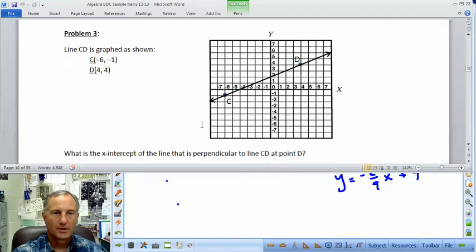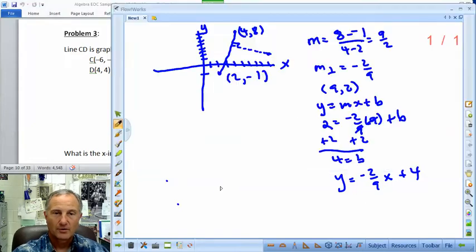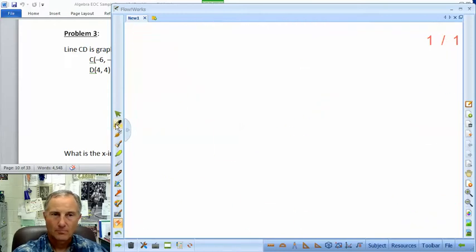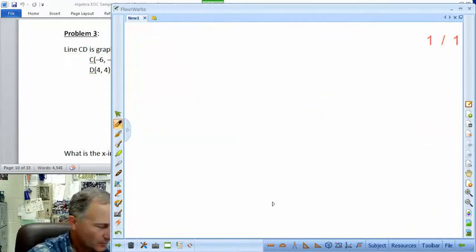Problem 3. Line CD graphed as shown. There's C, (-6, -1), and D is at (4, 4). What's the x-intercept of the line that is perpendicular to line CD at D? So a lot like what we just did. Okay. So we're going to come back over here. We're going to erase this.